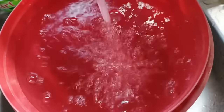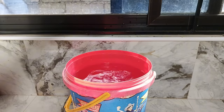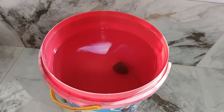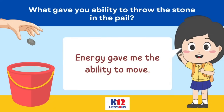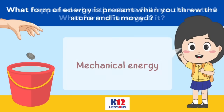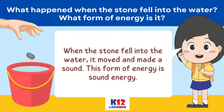Fill the pail with water until almost full. Throw the stone into the pail of water. Observe what form of energy is present when you threw the stone and when it hit the water. What gave you the ability to throw the stone in the pail? Energy gave me the ability to move. What form of energy is present when you threw the stone and it moved? Mechanical energy. What happened when the stone fell into the water? When the stone fell into the water, it moved and made a sound. This form of energy is sound energy.